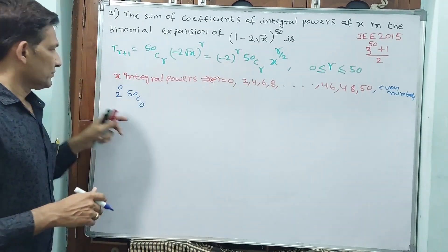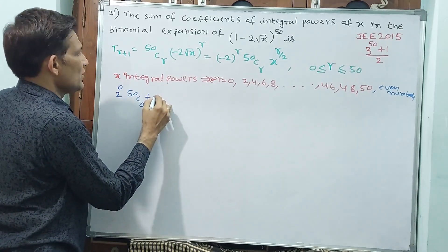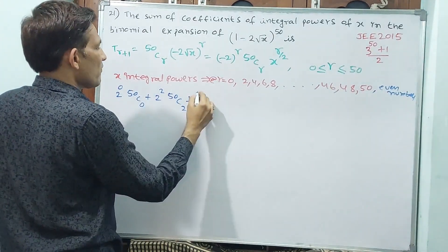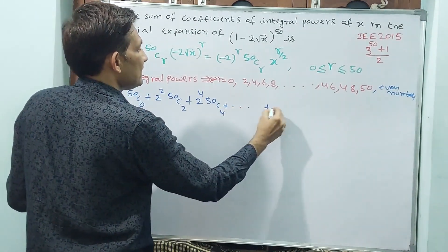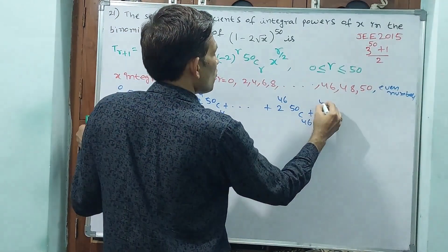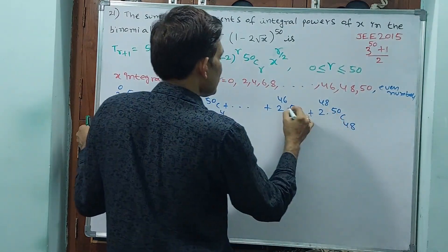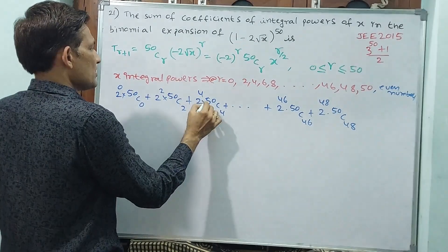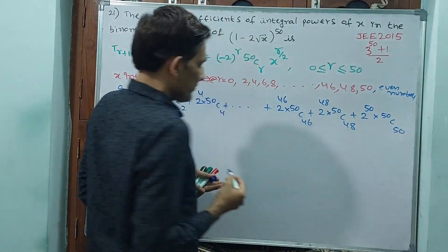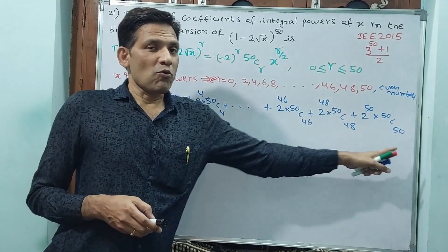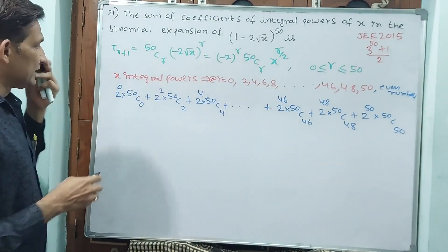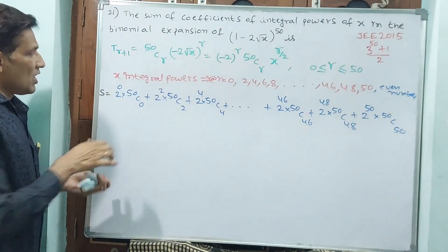Continuing the sum: 2^2 · 50C2 + 2^4 · 50C4 + ... + 2^46 · 50C46 + 2^48 · 50C48 + 2^50 · 50C50. These are the coefficients of integral powers of x. But how do we find this total sum?